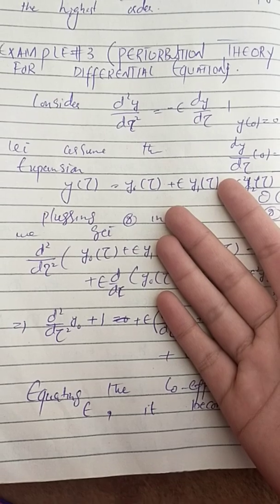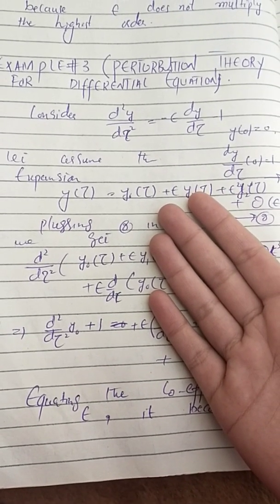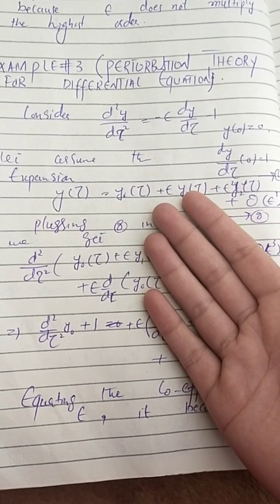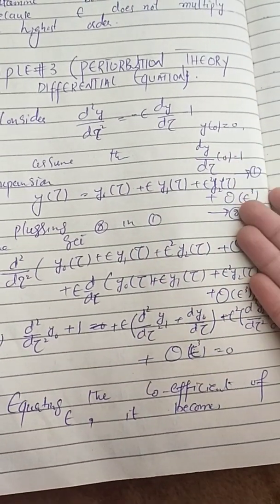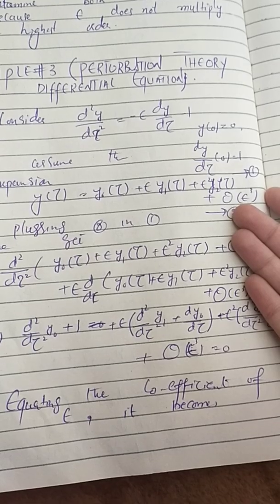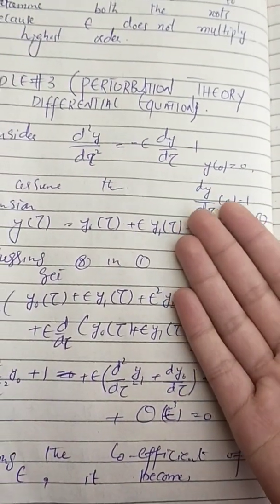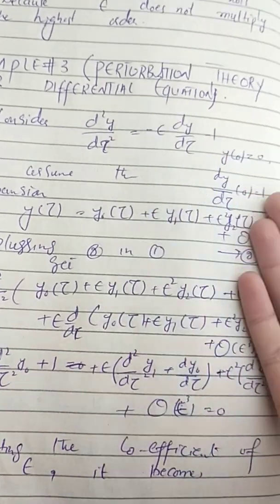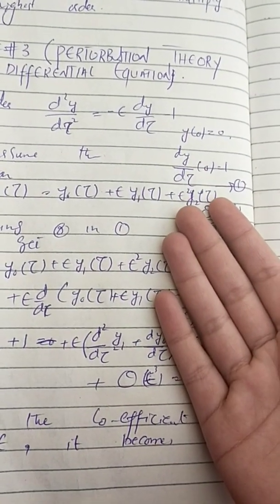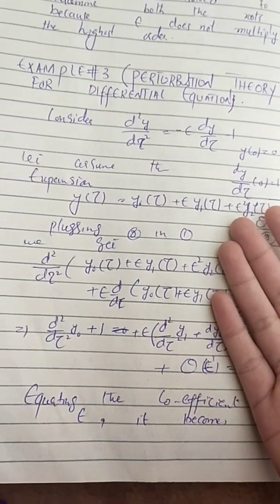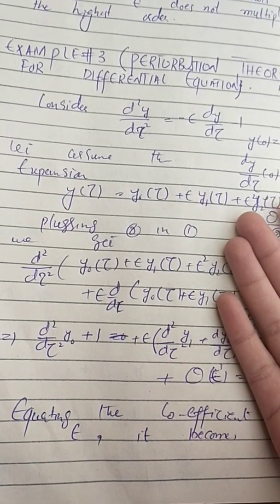Here we have an example: consider d²y/dτ² equals minus epsilon dy/dτ minus 1. The boundary conditions for this equation are y(0) equals 0 and dy/dτ at 0 equals 1.